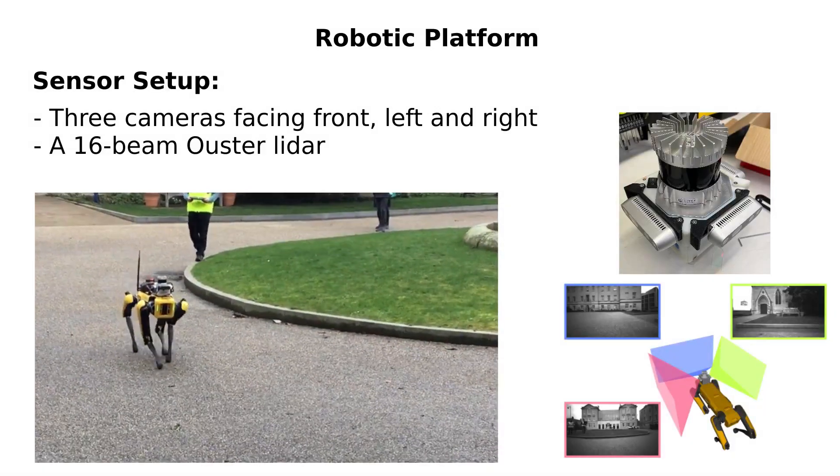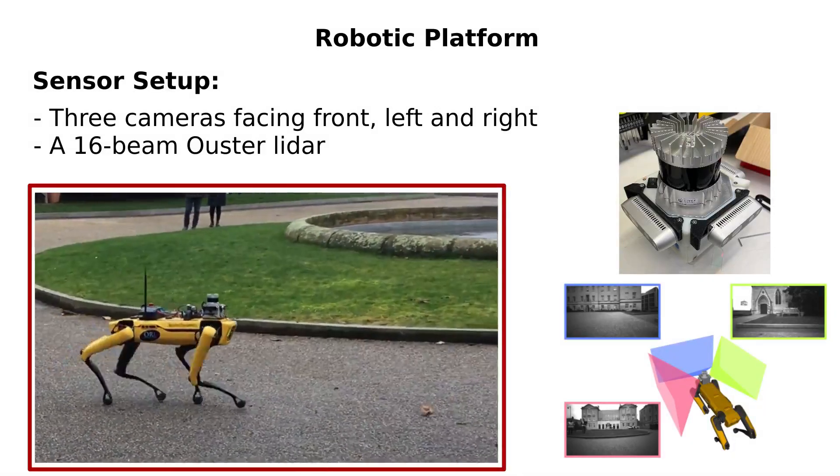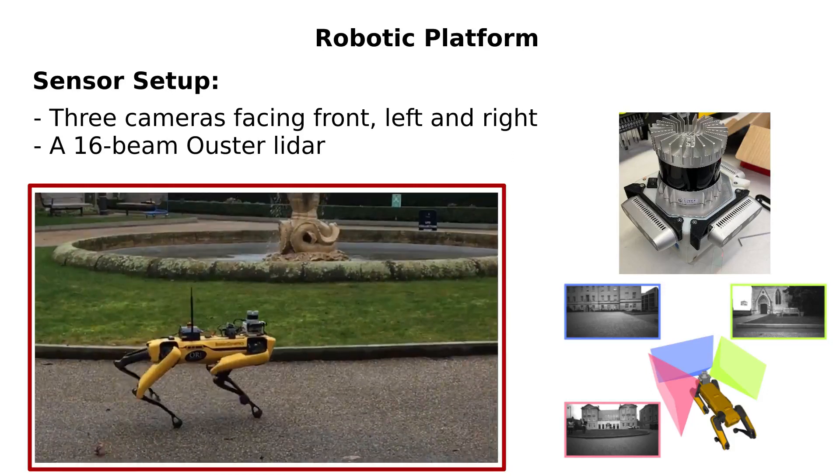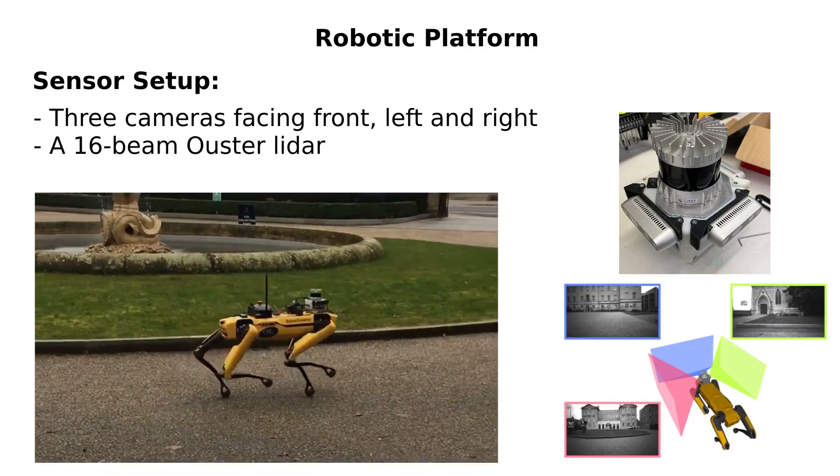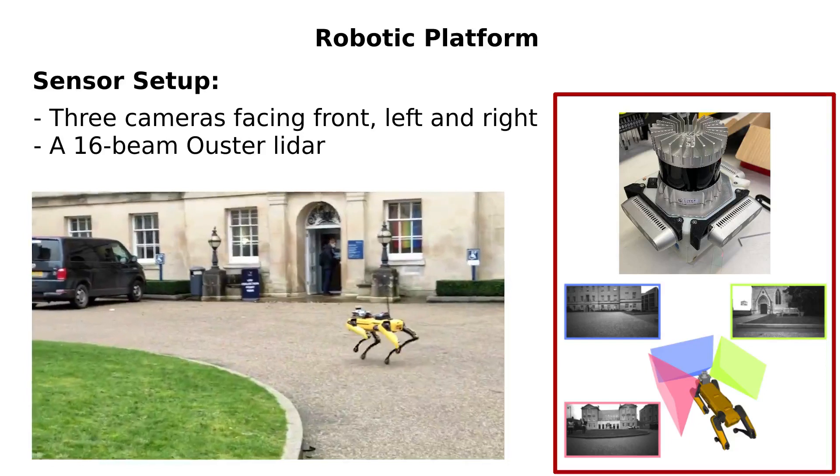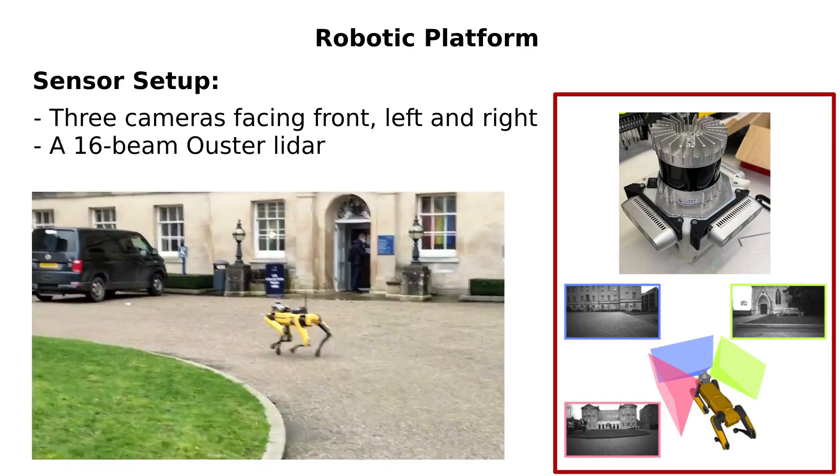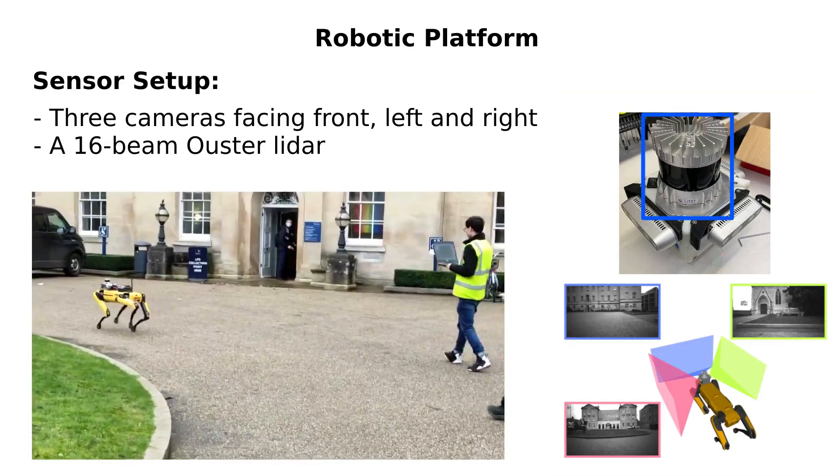We test our system on a mobile robotic platform, SPOT from Boston Dynamics. Our sensor consists of three real-sense cameras facing front, left and right, as well as a 16-beam Ouster LiDAR.